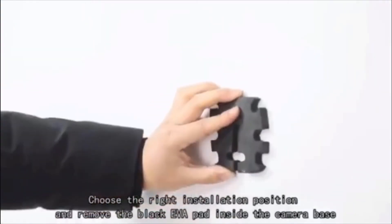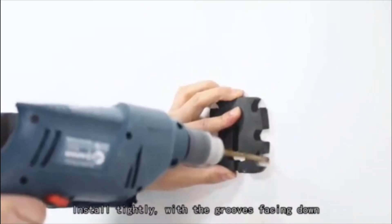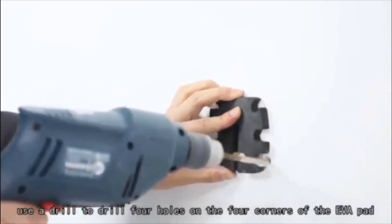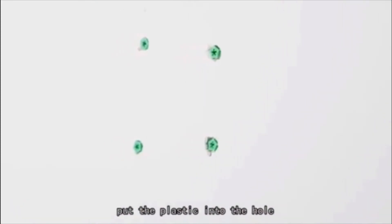Choose the right installation position and remove the black EVA pad inside the camera base. Install tightly with the grooves facing down. Use a drill to drill four holes on the four corners of the EVA pad, put the plastic into the hole.